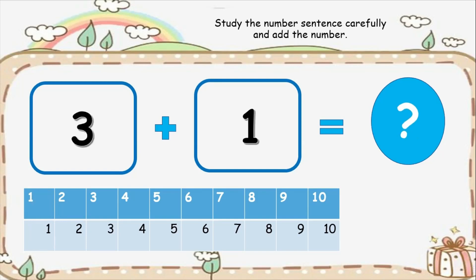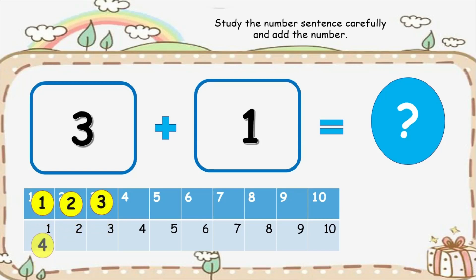Let's try it again. We have three plus one. In our ten frames, we are going to make three dots: one, two, three. On the other frame, we only have one dot. How many yellow dots in all? One, two, three, four. We have four dots in all. So we can say that three plus one equals four.